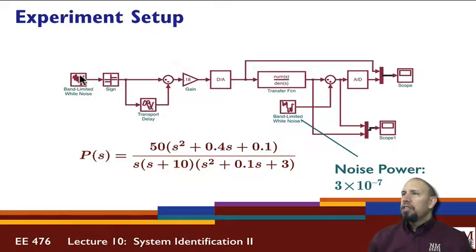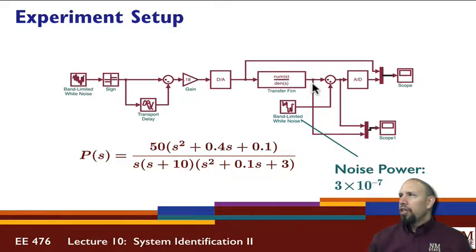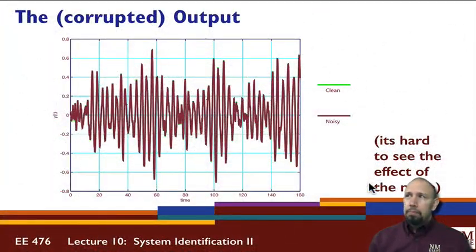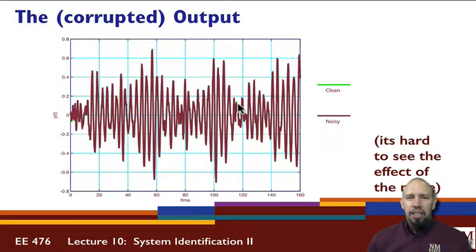Here's an example. I'm using an excitation signal scaled down by 0.18, put through the digital-to-analog converter, with band-limited white noise added — so this is additive noise that's actually being measured. The noise power is 3×10⁻⁷, which is a small number. Comparing the two signals — clean (green) and noisy (crimson) — the difference is very slight. So the noise is just a tiny amount.